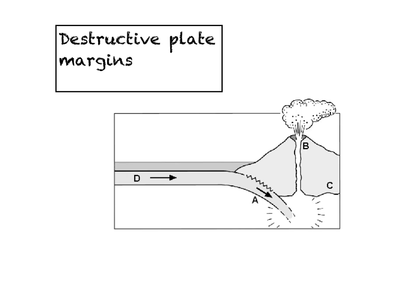Now this is the second part of the homework — the same task repeated for destructive rather than constructive plate margins. You're going to draw an annotated diagram showing the sequence, the main features, and how the processes create the main features and characteristics of a destructive plate margin. Here is a very simple diagram of a destructive plate margin. You can see that this plate is moving towards the plate on the right-hand side — they are moving together, one that way, one that way. You can already see some of the main differences: they're moving together, and one of them is being forced down underneath the other.